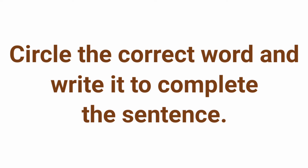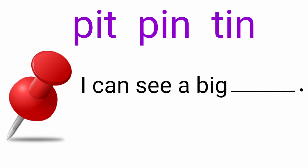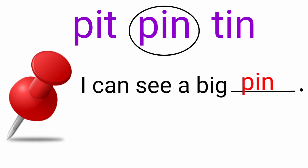Let's go. Look at the picture — there is a big pin. Then read the incomplete sentence: I can see a big dash. Here the three words are given: pit, pin, tin. So here the suitable word is pin, so we need to circle the word pin and then write it to the sentence: I can see a big pin.